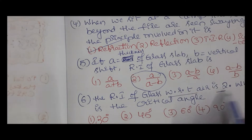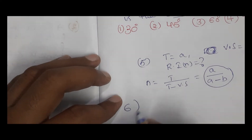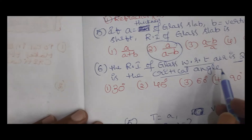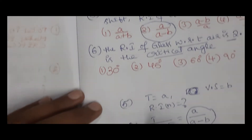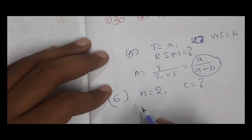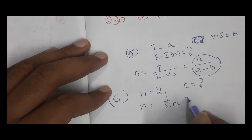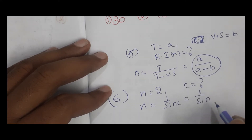Question 6: refractive index of glass with respect to air is 2. What is the critical angle? n = 2, and we want to find critical angle C. We have the formula: n = 1 / sin C, so sin C = 1/2.